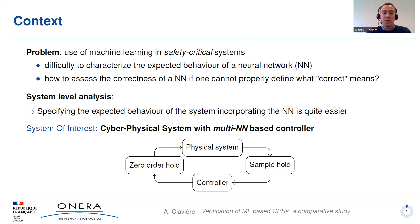That's why we focus here on a system level analysis that aims at verifying not only a machine learning model in isolation, but the whole system that incorporates this machine learning model. More specifically, we focus on a particular class of system which we call cyber physical system with multiple neural network based controller — a closed loop that combines a physical continuous time system with a discrete time controller, which will be further described in the rest of the presentation.